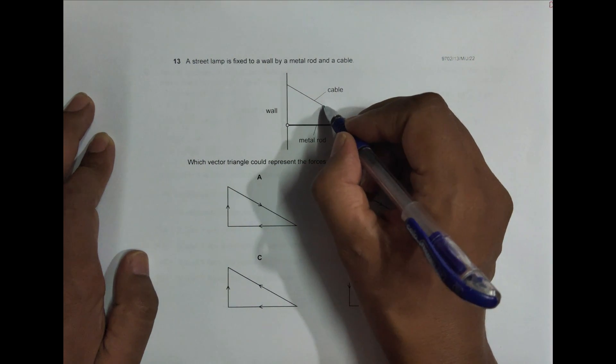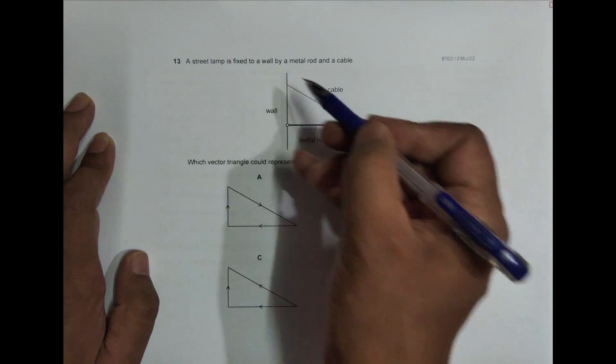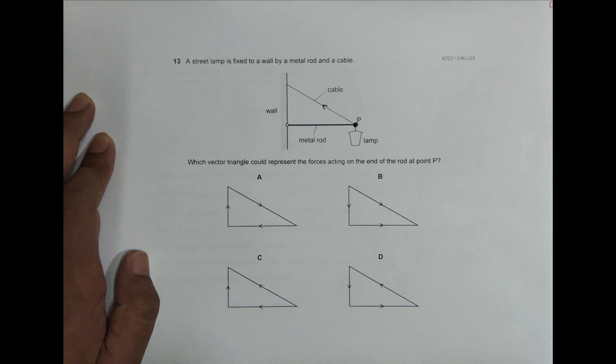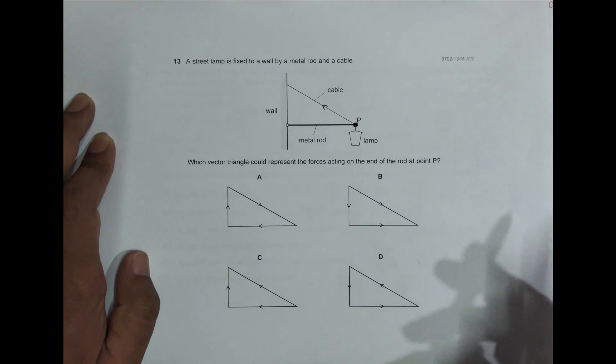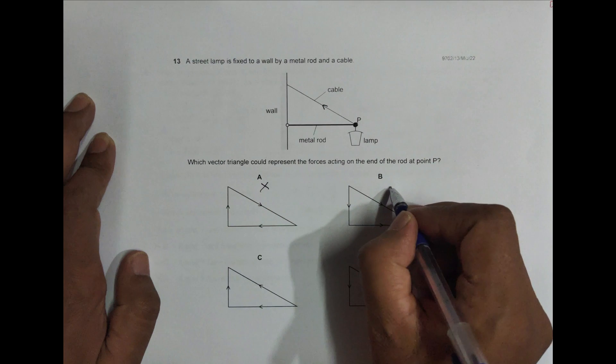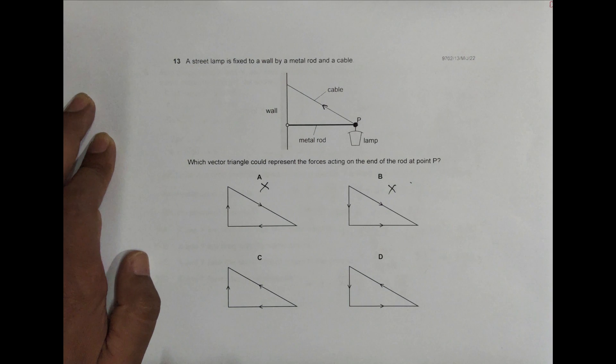Since this is the end, this string will be acting the force like this. It will be trying to pull the body like this. So in the vector triangle we must have this sort of arrow. That means this and this disqualifies because the arrow is like this. So they disqualify, these two qualify.